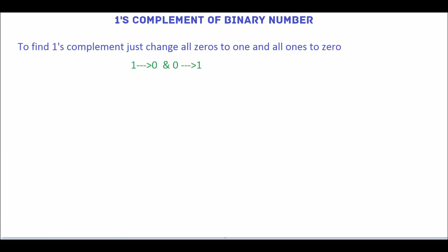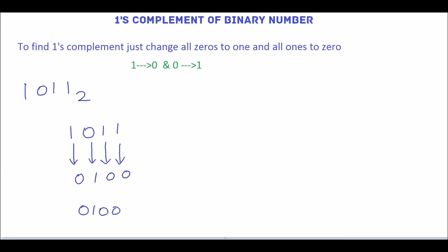Let's see how to represent the binary number 1 0 1 1 in ones complement. First, write the given number 1 0 1 1, then change 1 to 0, 1 to 0, 0 to 1, and 1 to 0. So, 0 1 0 0 is the ones complement of 1 0 1 1.